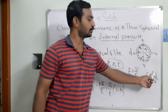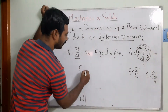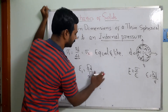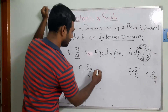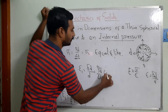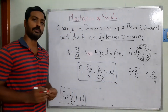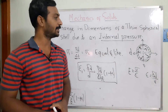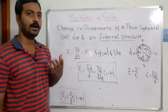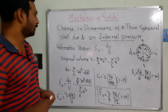The strain is epsilon = delta-D/D, which represents the change in diameter. So delta-D/D = PD/(4tE) * (1 - mu), where (1 - mu) involves Poisson's ratio. This is how we calculate the diametral strain. Due to symmetry, the strain in the x-direction equals the strain in the y-direction. Now we will find the volumetric strain inside this material.